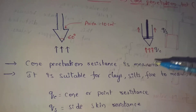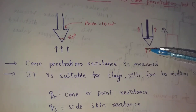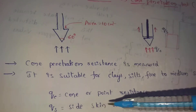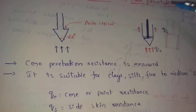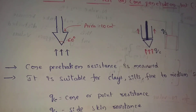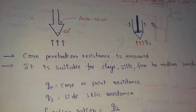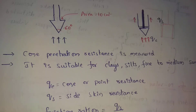For the Static Cone Penetration Test, the cone is pushed into the soil. Two resistances are measured: QC, which is the cone point resistance, and QS, which is the side skin resistance. Cone penetration resistance is measured. This test is suitable for clay, silt, and fine to medium sand.